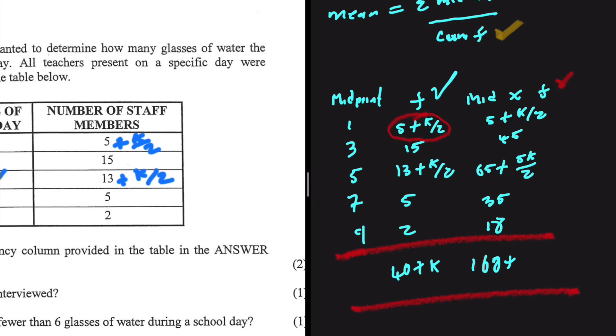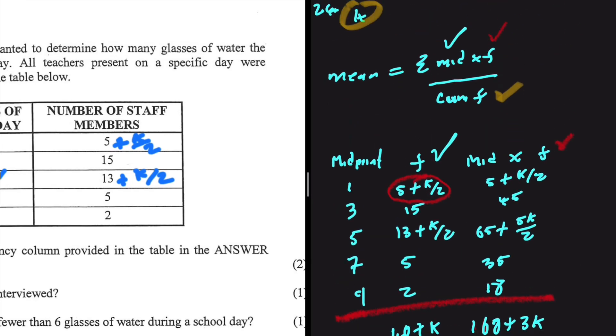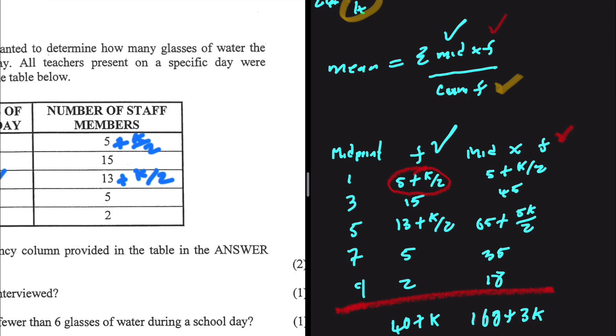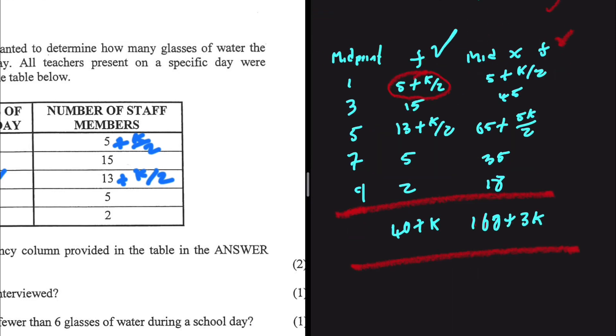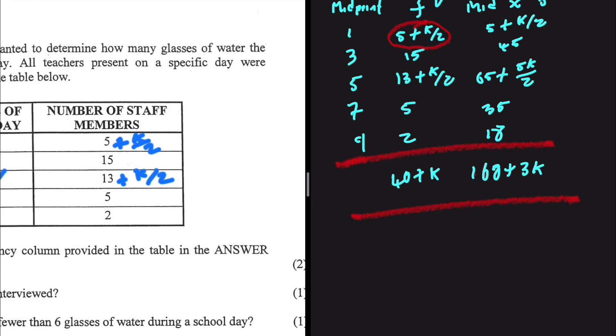Now we can go ahead and substitute on our formula. Let's not forget that we're supposed to come and substitute here. If we do that we're gonna have the mean which is 4 being equals to the midpoint multiplied by the frequency, the sum, so that is 168 plus 3k divided by the cumulative frequency that is 40 plus k.